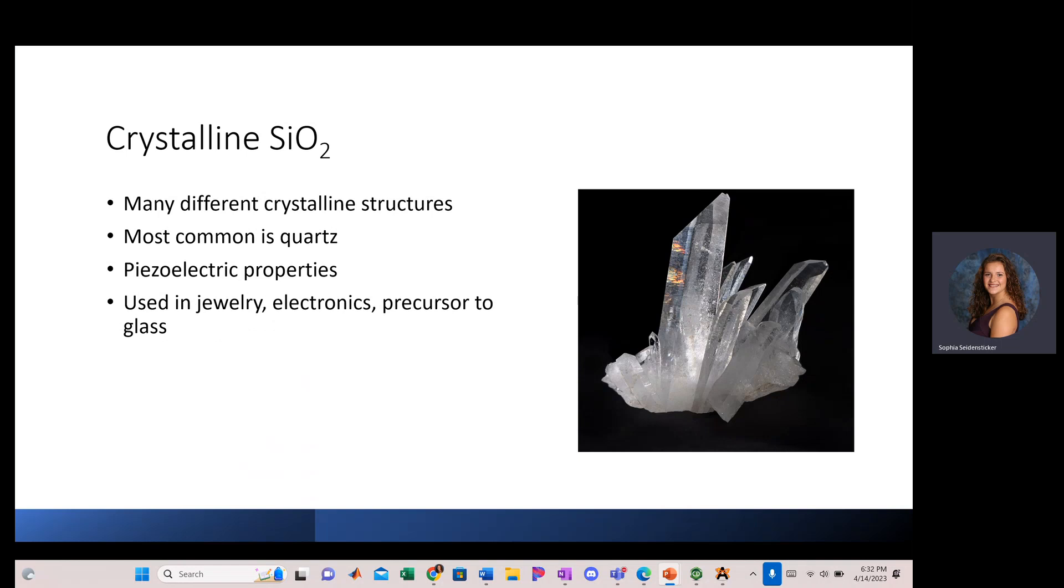Silicon dioxide has many different crystalline structures. It is most commonly found in nature as quartz. Tiny silicon dioxide crystals are common components of the sand found in many parts of the world. Pure quartz is clear, but there are many different colors that can emerge from impurities.